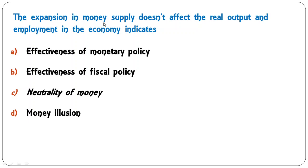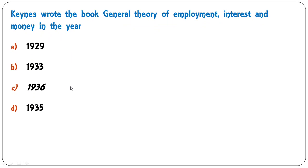Next question: expansion in money supply does not affect the real output and employment in the economy — this indicates effectiveness of monetary policy, effectiveness of fiscal policy, neutrality of money, or money illusion? The correct answer is neutrality of money. Money expansion does not affect real output — it affects only the price level. This is the meaning of neutrality of money. So C is the correct answer.